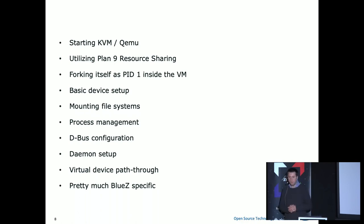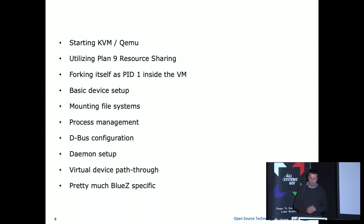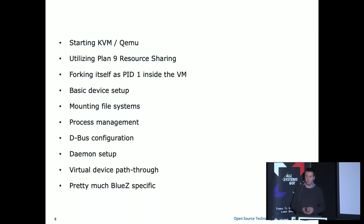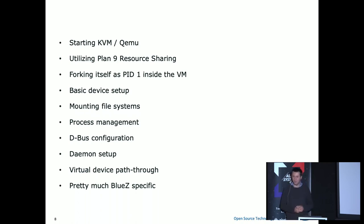It uses Plan 9 resource sharing, a file system from old days where you can pass through the host file system into your guest, which is kind of nice. It starts itself — once you start it, it forks itself and becomes PID1. It sets up the basic file system, mounts the different extra partitions needed, and does process management, because once you're PID1 you have to manage processes and figure out when they terminate so you can clean up. Cleaning up KVMs is actually kind of nasty in certain situations, so you have to do it the right way.